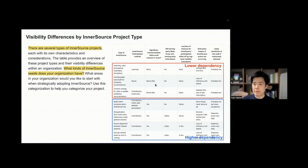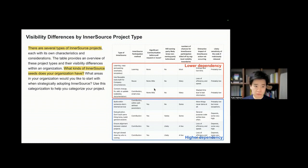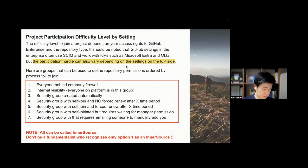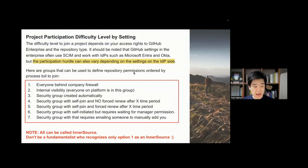This kind of project-level differentiation and prioritization setting is very important even for GitHub configuration. The participation hurdle can also vary depending on the setting on the IDP side — this is something sometimes not told, but IDP configuration, especially for GitHub Enterprise Cloud users, is very important.